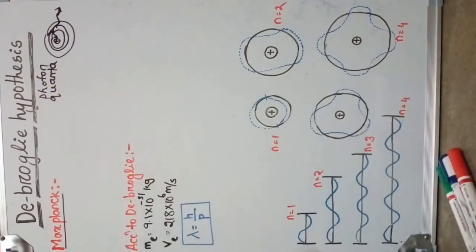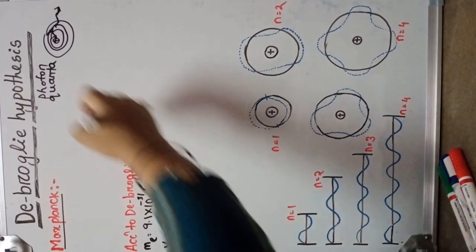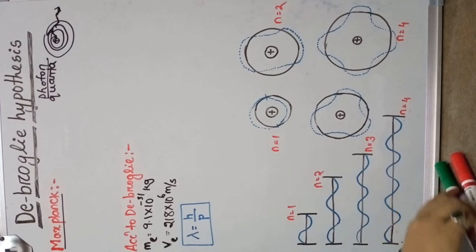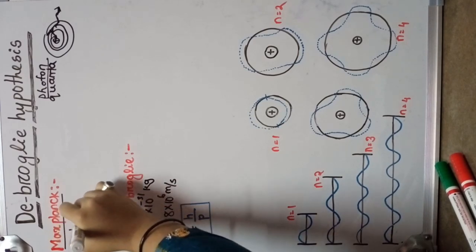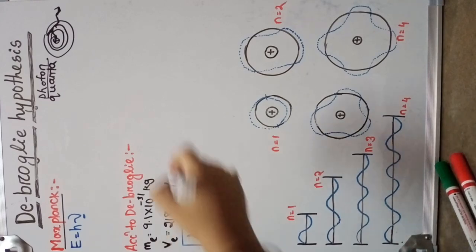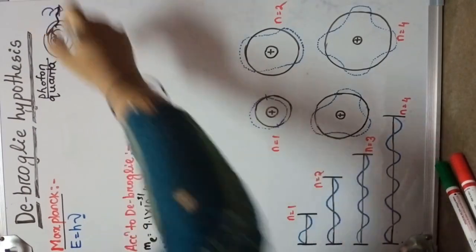All waves are made up of small tiny particles called photons or quanta. What is the energy of the photon? That is equals to E equals to H nu, where nu is the frequency of this wave.